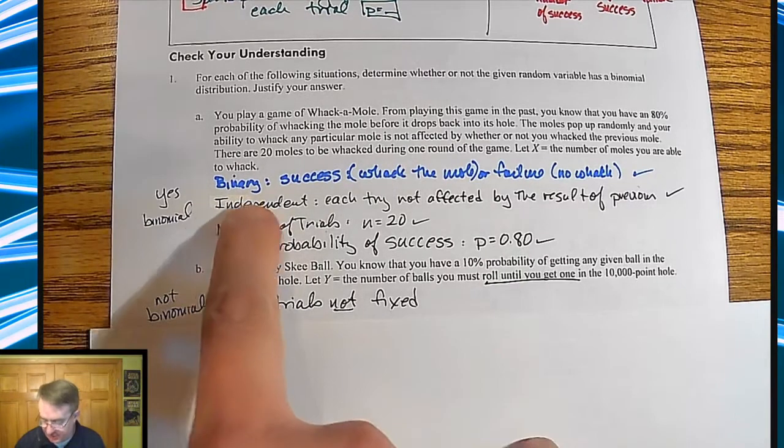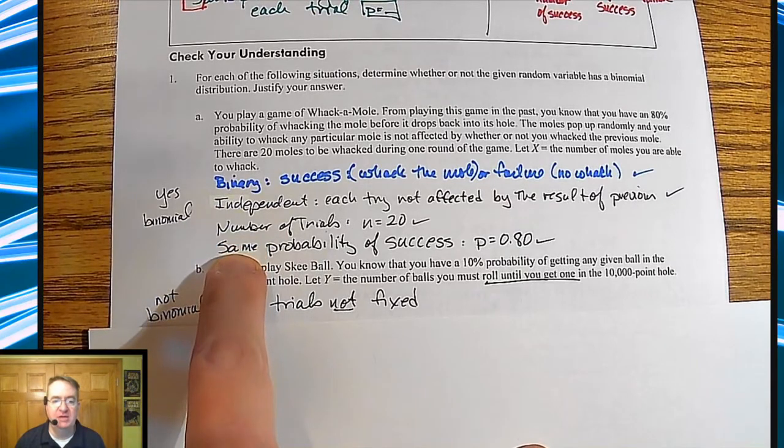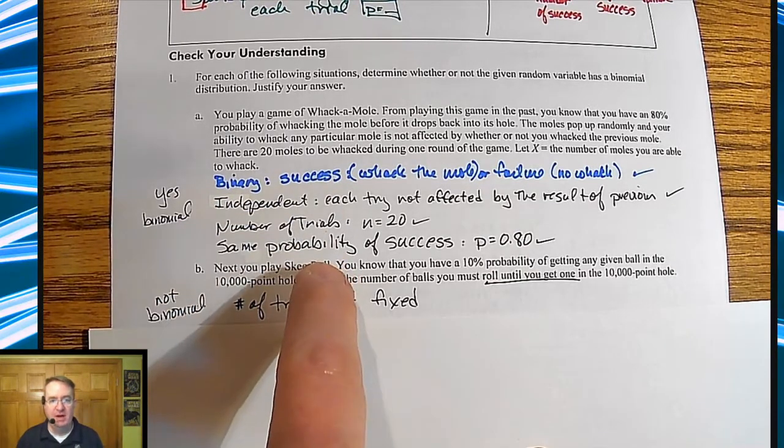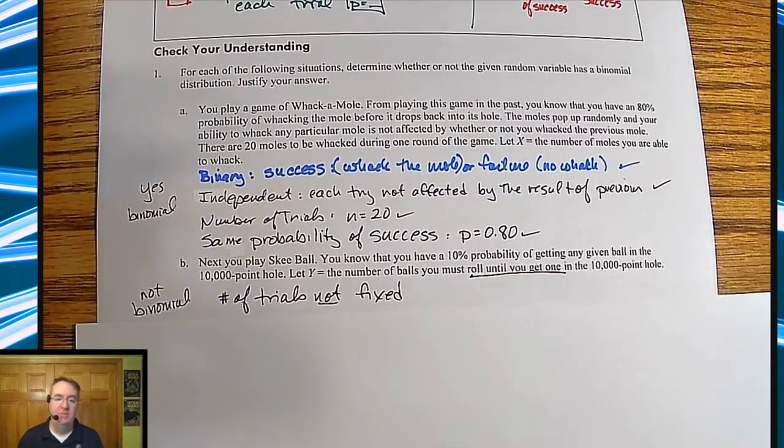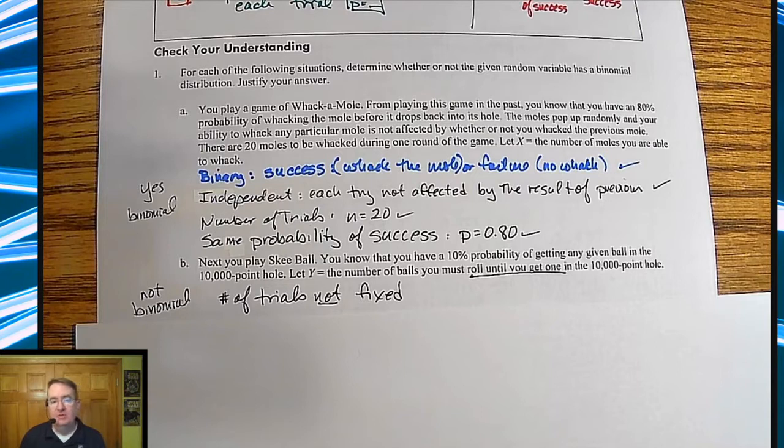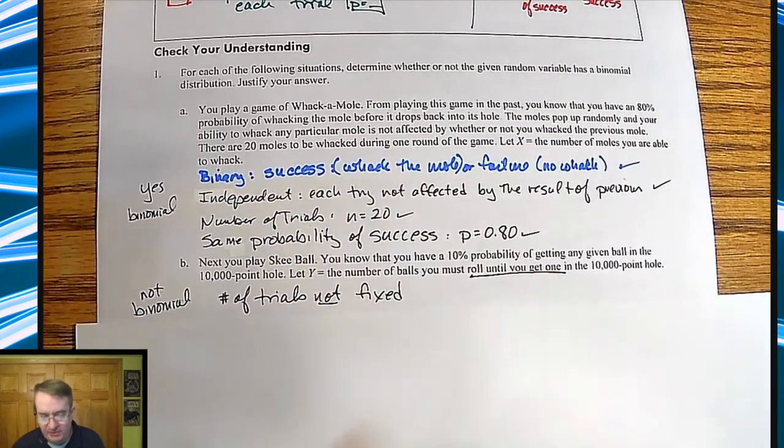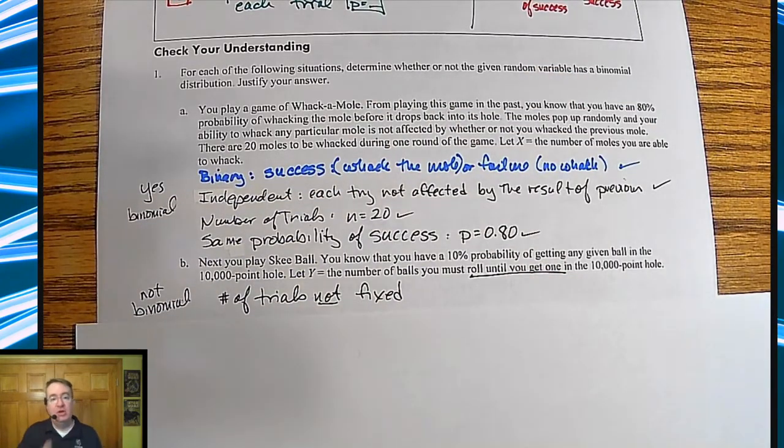When I do these problems, I think about what each one of these BINS say. And in my mind, before I start writing them out, I kind of think it's like binary, okay, either you're making it or you're not. Independent, yeah, each roll is going to be independent. Number of trials, now, oh wait, that's where it is. So you're not in the middle of writing all of this stuff up. Because remember, for it to not work, you only need one thing to fall through. If you were trying to prove something is true, you have to prove every single part of the definition. If you want to prove something to be untrue, you just need to show one part to fail.